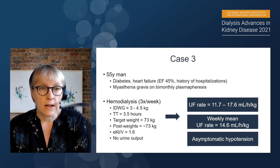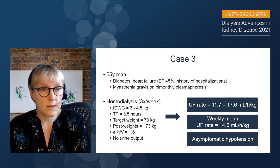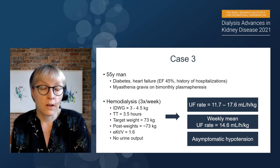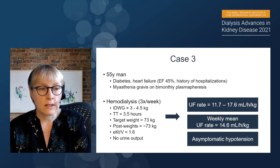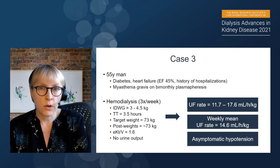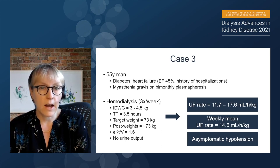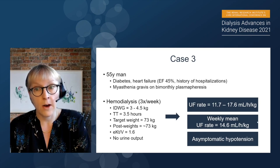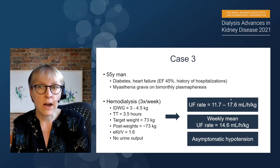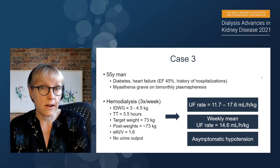Case three is a 55-year-old man with diabetes, heart failure, and myasthenia gravis who receives bimonthly plasmapheresis and hates coming to clinic. He's on three times a week hemodialysis with interdialytic weight gains of three to four and a half kilos and a short treatment time of three and a half hours — historically because he doesn't want to be in the clinic. His target weight is 73 and he usually gets there, but his UF rates range from 12 to 18 mLs per hour per kg with a mean weekly rate of 14.6 mLs per hour per kg. He's not a diuretic candidate as he makes no urine.